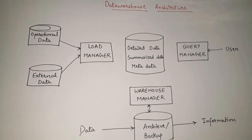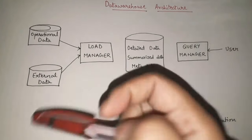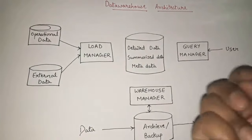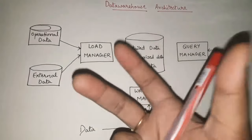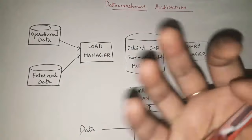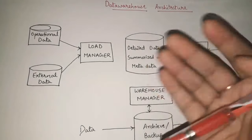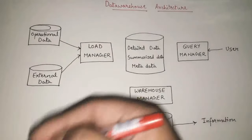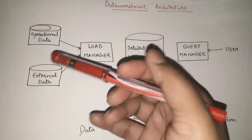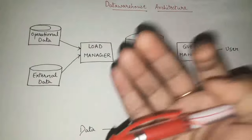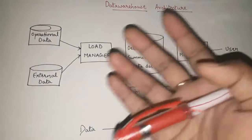Let's start with the whole flow of data warehouse architecture. First of all, operational data and external data are given as input. We are getting data from various sources in bulk. We can broadly categorize that data into two main categories: operational data and external data.